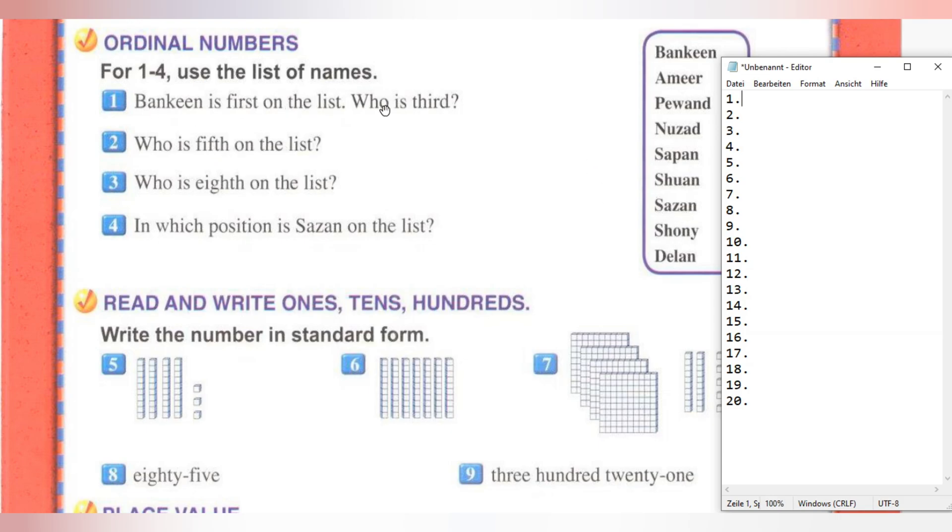Nuzul is third. Who is fifth on the list? Sapan. Who is eighth on the list? We will go to the eighth position number. Shoni.